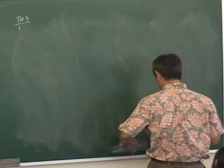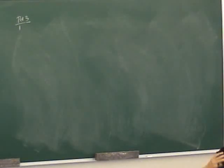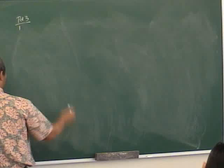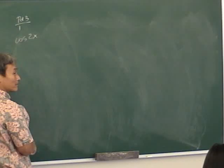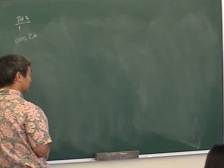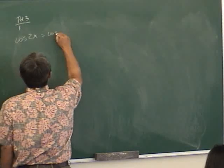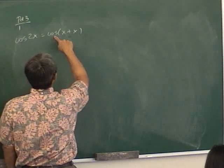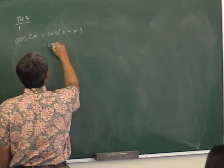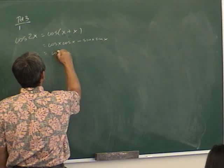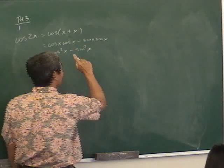Today we're going to learn double and half angle identities. For cosine(2x): change 2x into x+x, and since you know the cosine addition identity — cosine(A+B) = cosine A·cosine B − sine A·sine B — with both angles equal to x, cosine times cosine gives cosine squared, and sine times sine gives sine squared. So cosine(2x) = cosine²x − sine²x. That's the first identity.